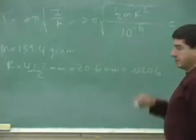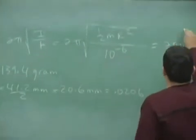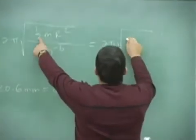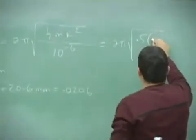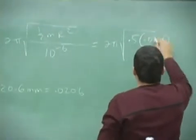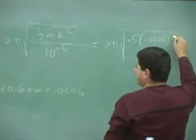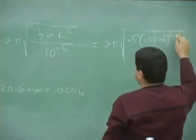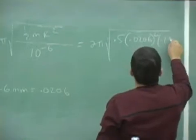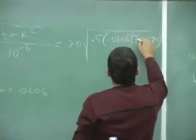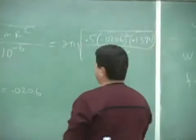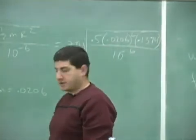Okay, so let's do that then. 2 pi square root of, this one is a half squared times the mass, which is 0.1394. Put all that stuff together.